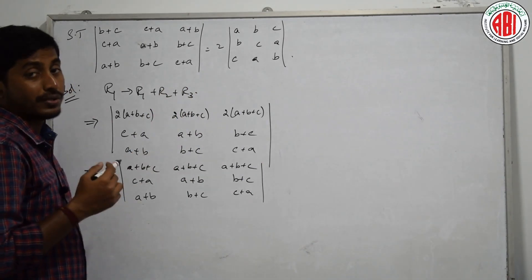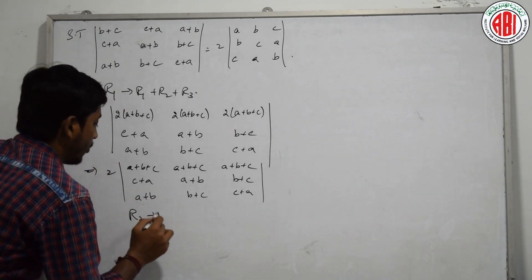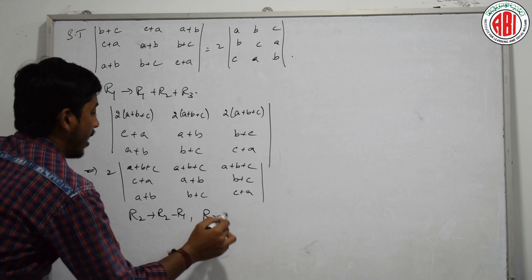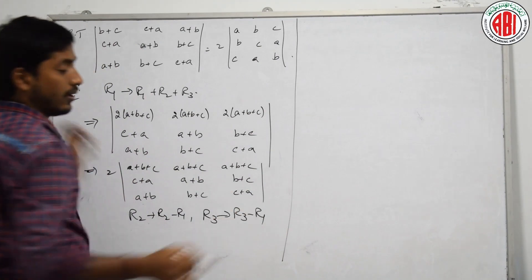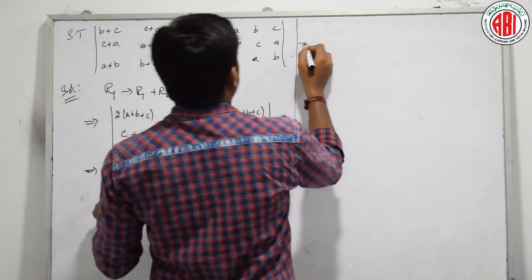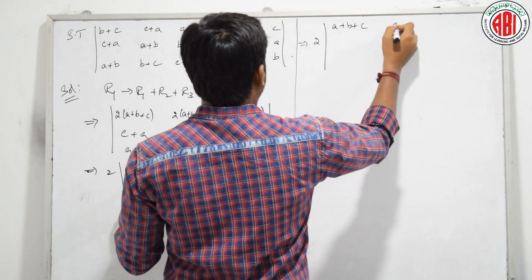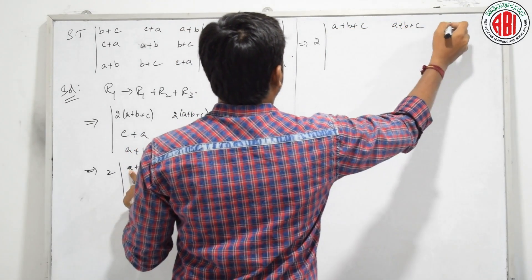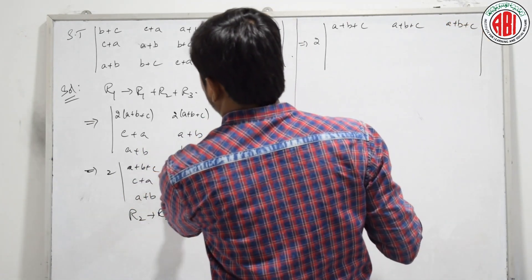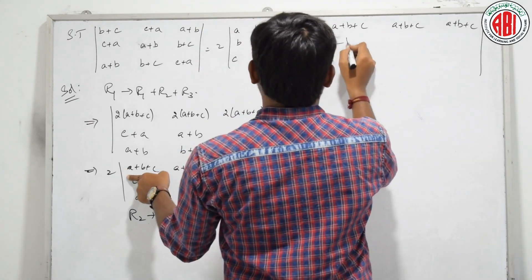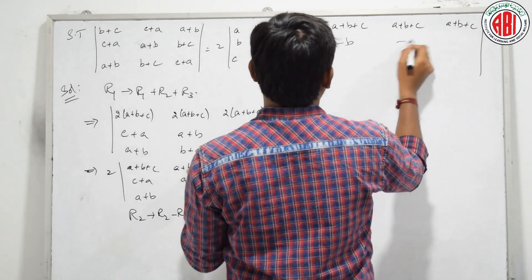Now let us use our popular operations: R2 tends to R2 minus R1, R3 tends to R3 minus R1. We have 2 into (A plus B plus C) common from row 1. Applying: C plus A minus (A plus B plus C) — C and A cancel, leaving minus B. A plus B minus (A plus B plus C) — A and B cancel, leaving minus C.